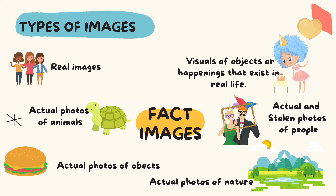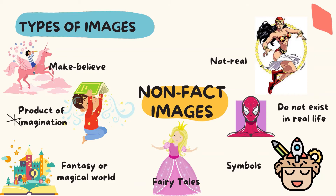Now, what are fact images? This is a type of image which shows real images like photos of your friends, visuals of objects or happenings that exist in real life — like birthdays, actual and candid photos of people, nature, and objects like this hamburger, and even photos of animals. They are all fact images.